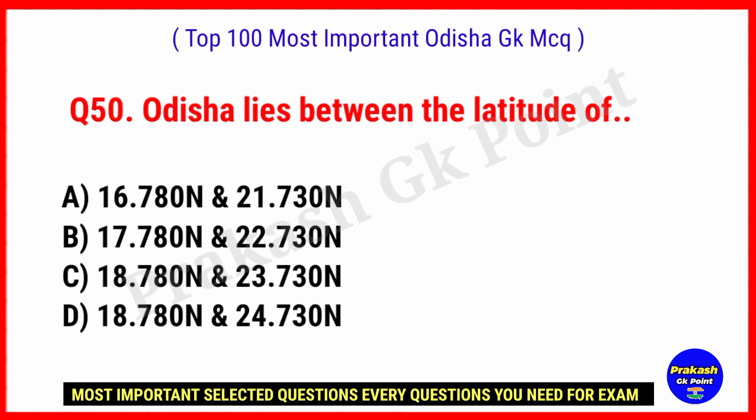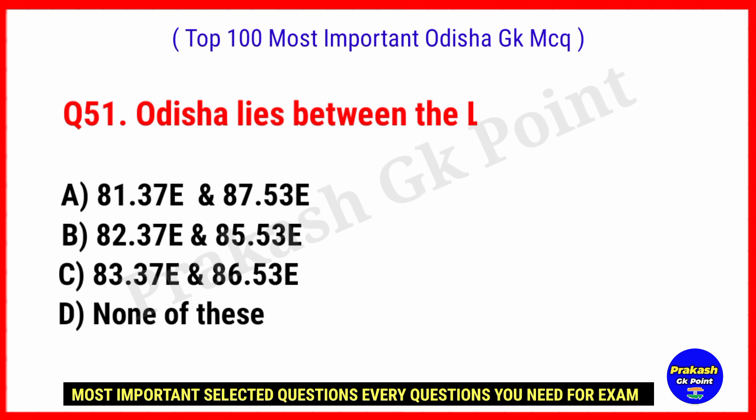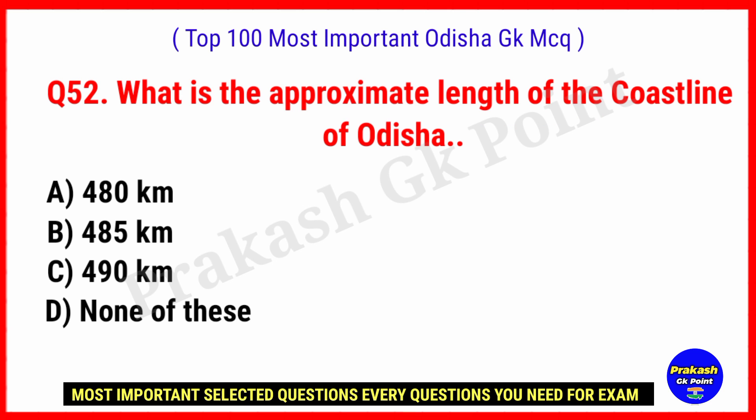Odisha lies between the latitude of? Answer: Option B, 17.78° North and 22.73° North. Odisha lies between the longitude of? Answer: Option A, 81.37° East and 87.53° East.